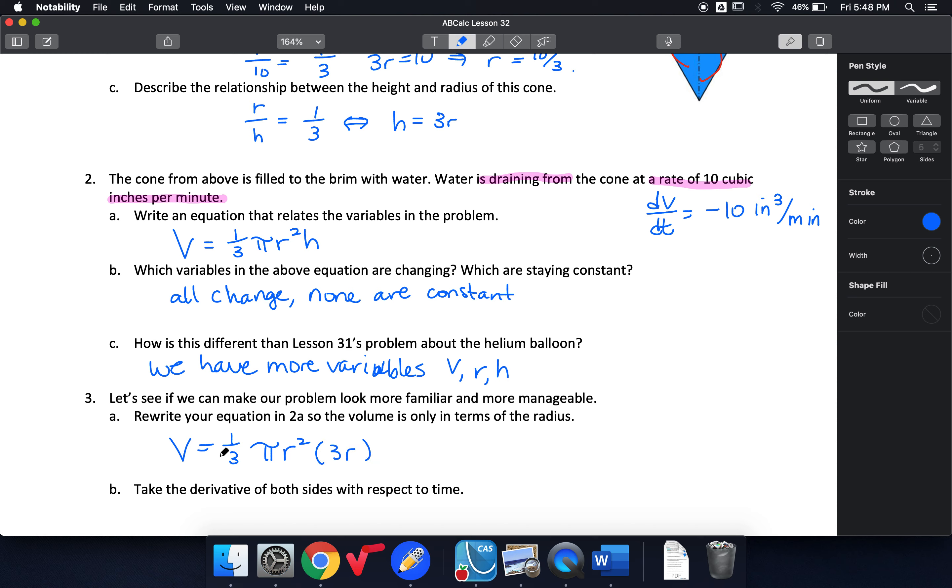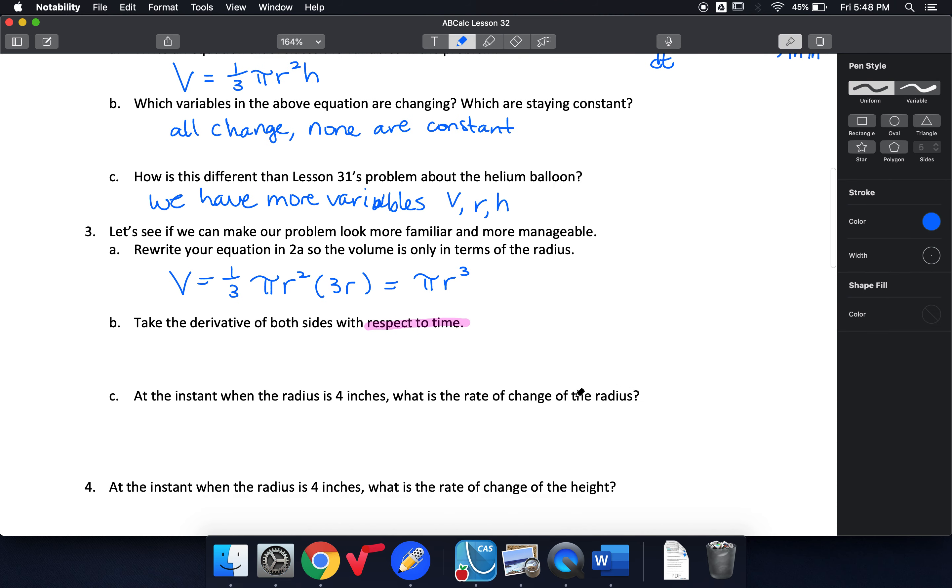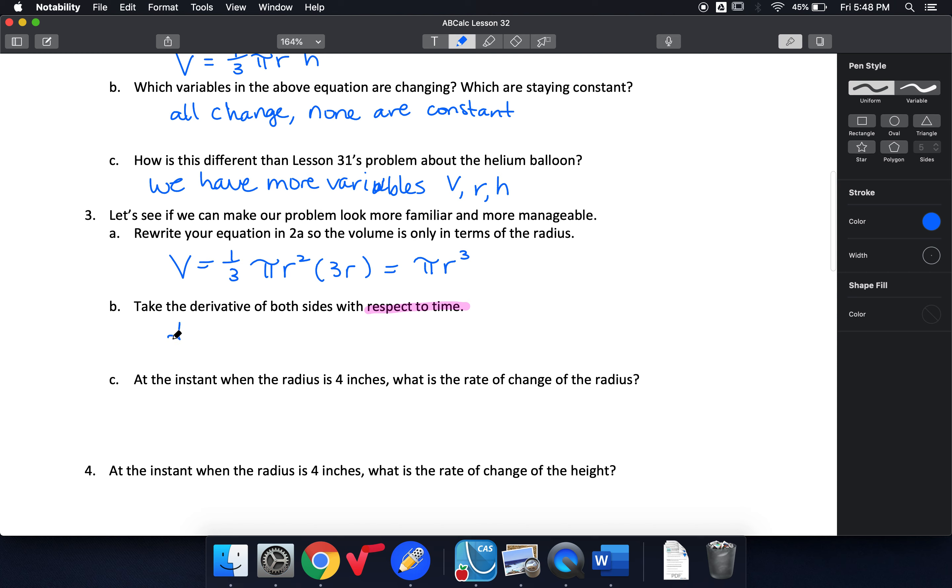And now I can take my derivative using chain rule because I'm going to do it with respect to time. So taking derivative of the left side with respect to time I get dv/dt. Taking the derivative of the right side I need to do derivative of the inside, that's dr/dt, times derivative of the outside, 3 pi r squared.